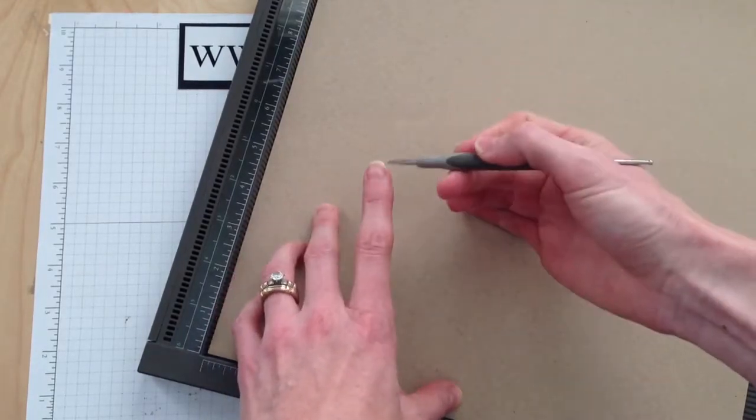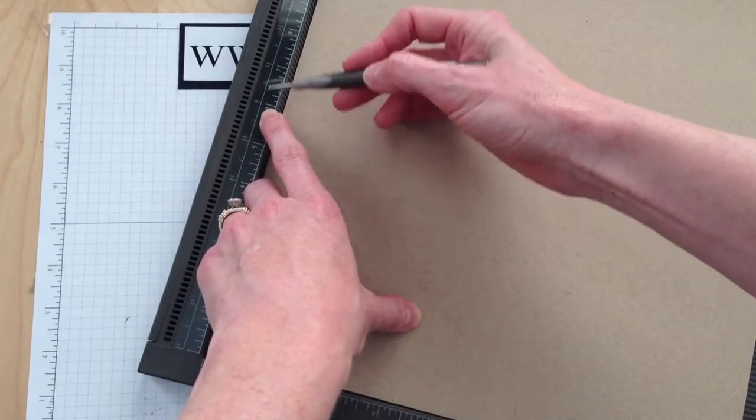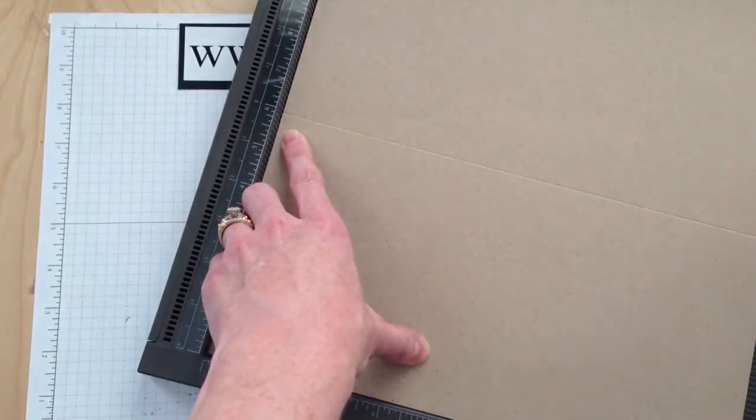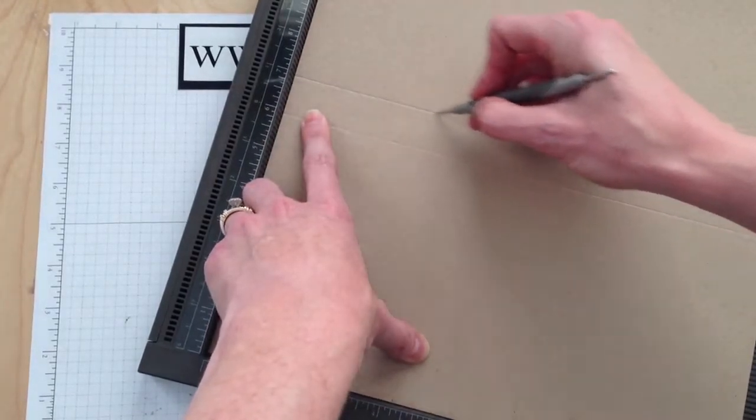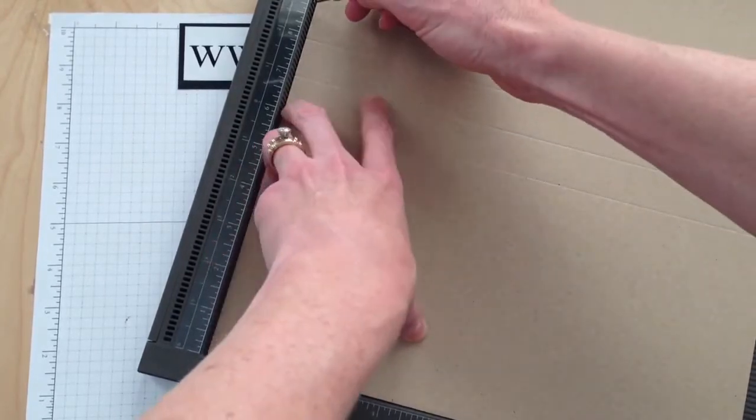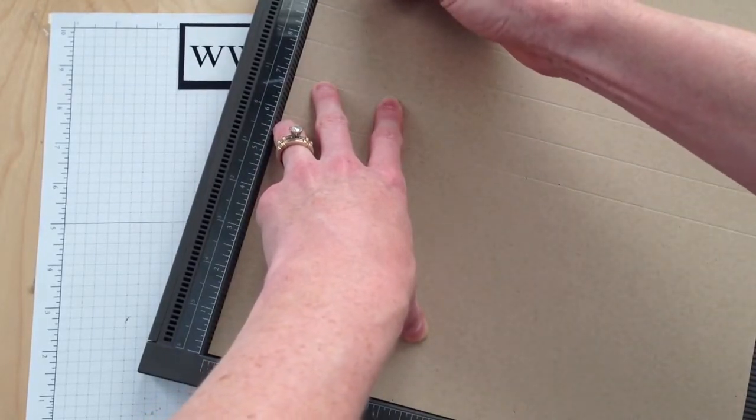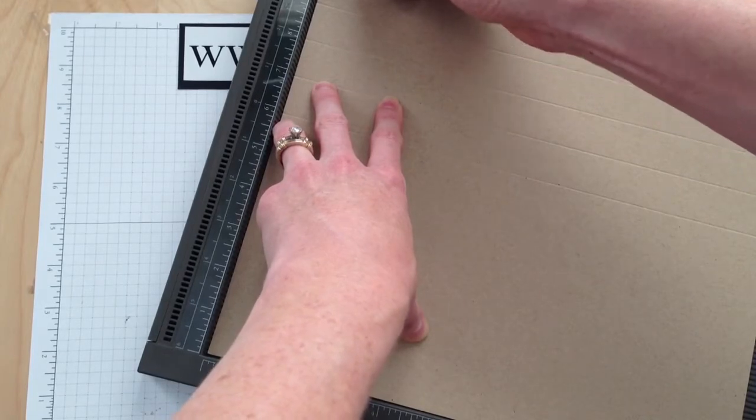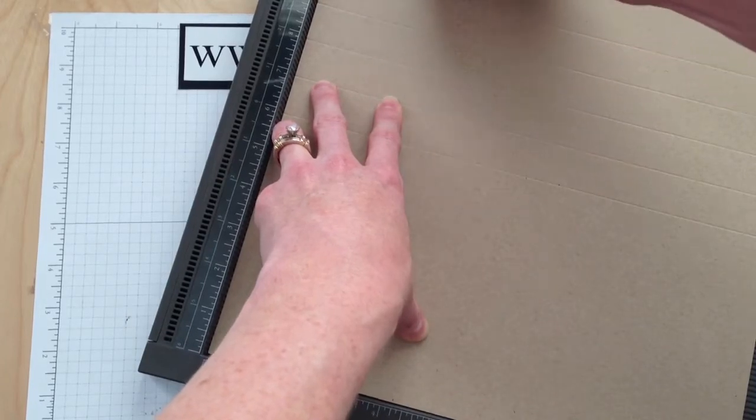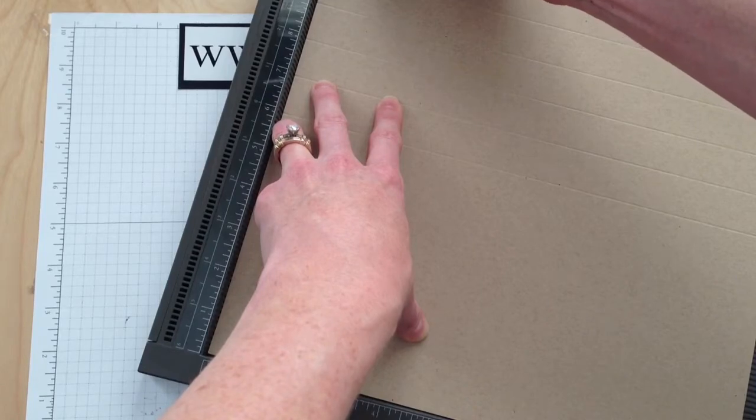I'm going to use the thin part of my stylus, and I'm going to start scoring from the 6-inch mark every inch until I get to the middle of the paper. So that's 6, 7, 8. I'm going to go all the way to 12. Kind of hard to do this on this weird angle, but it's working.